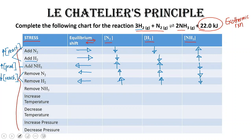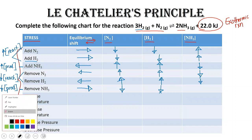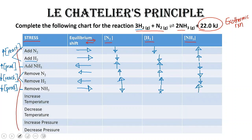Now let's see what happens if we decrease the concentration of a product. If I remove ammonia from the system, constantly removing product from the reaction mixture will continually drive the reaction forward to make more and more product. So the equilibrium shifts forward, reactant concentrations go down, and we end up forming more product.